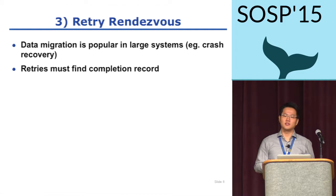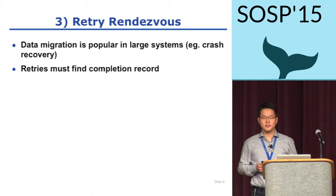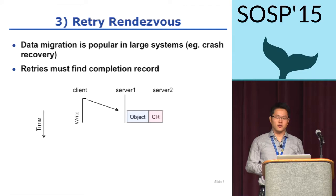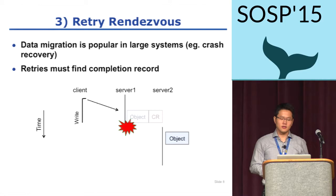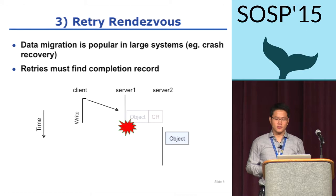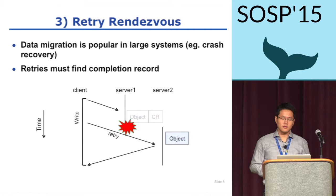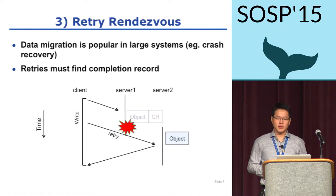It is a difficult problem in distributed systems since data moves around, especially during crash recovery. Here, a client is writing onto an object residing in server one. The initial write request was successfully applied to durable storage and the completion record was generated on server one. Now the server crashes right before responding back to the client. The object is then reconstructed in another healthy server, server two. But the completion record stays at server one. The retry of the write request is directed to server two, but that server doesn't own the completion record and cannot handle the retry.